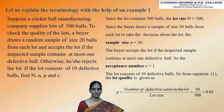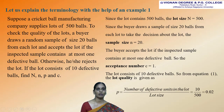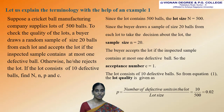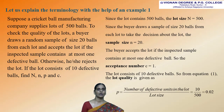Let us explain the terminology with the help of an example. Suppose a cricket ball manufacturing company supplies lots of 500 balls. To check the quality of the lots, a buyer draws a random sample of size 20 balls from each lot and accepts the lot if the inspected sample contains at most one defective ball; otherwise, he or she rejects the lot. If the lot consists of 10 defective balls, find N, n, p, and c.